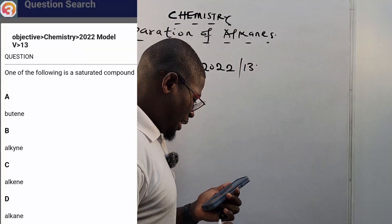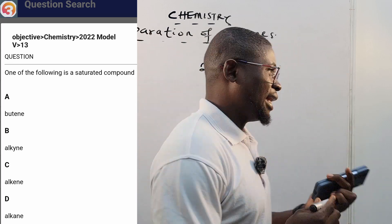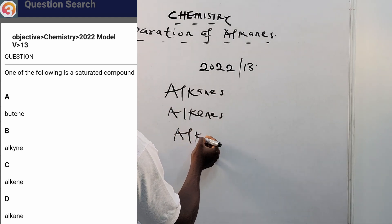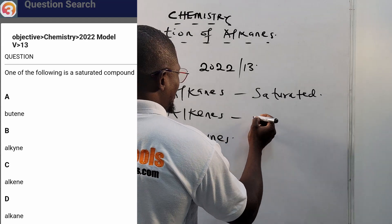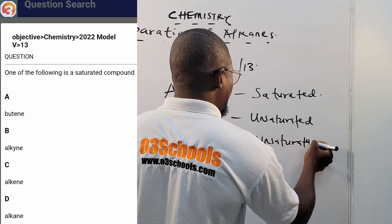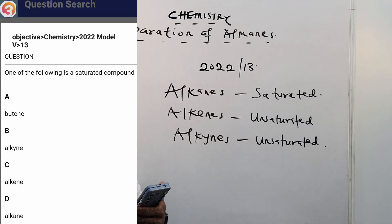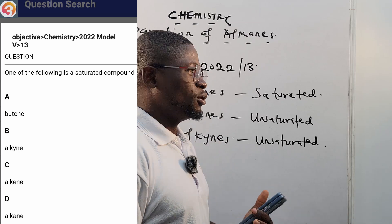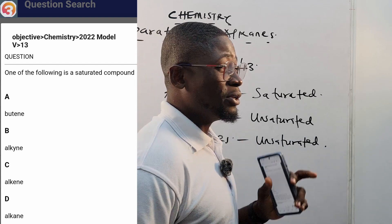Question 13 says: 'One of the following is a saturated compound.' I told you in the last episode that we have alkanes, alkenes, and alkynes. Alkanes are saturated — they are full, they cannot take more hydrogen atoms. Alkenes and alkynes are unsaturated. So alkanes are the only saturated hydrocarbons.